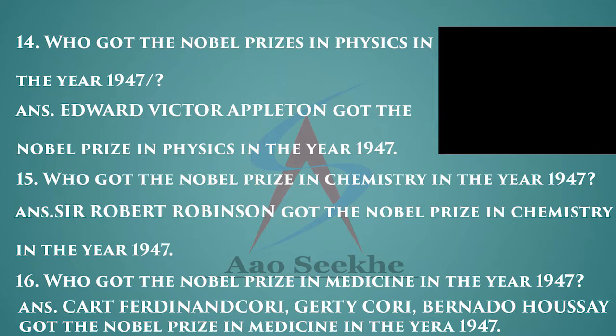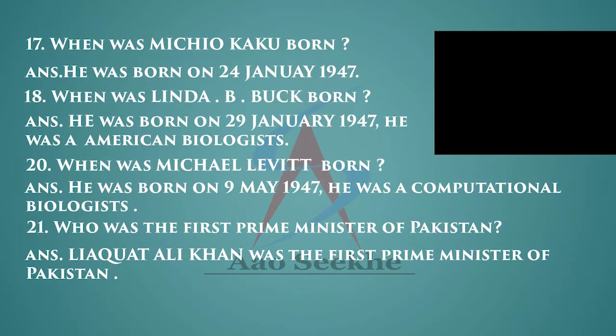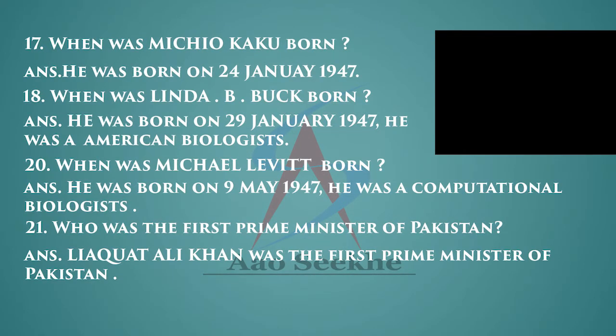Sixteenth: who got the Nobel Prize in Medicine in the year 1947? Carl Ferdinand Cori, Gerty Cori, and Bernardo Houssay got the Nobel Prize in Medicine in 1947.